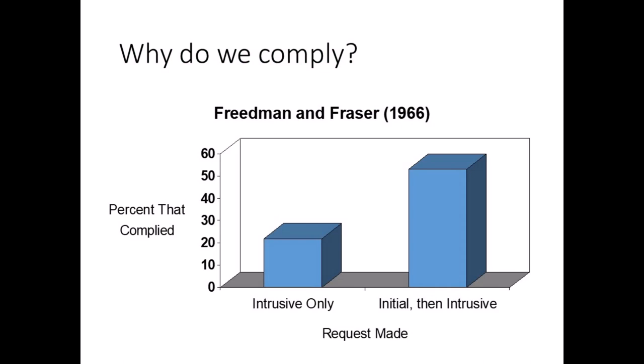In the 1960s, Jonathan Friedman and Scott Fraser called a large sample of female homemakers in California. In one condition, they made a very intrusive request — asking if strangers could go through their household products for a few hours to take an inventory. Only 22% complied. In the other condition, using the foot-in-the-door technique, they first asked women to answer some questions about household products. Three days later, they made the intrusive request, and compliance nearly doubled to 53%. Results like these have been replicated again and again — we're more likely to donate money, time, food, and blood when we first complied with a smaller initial request.